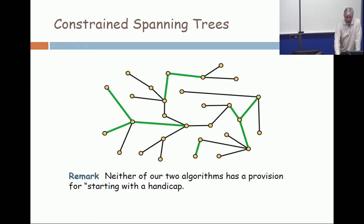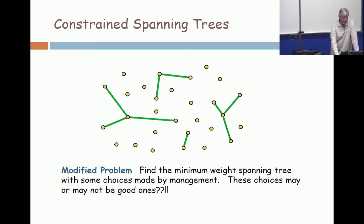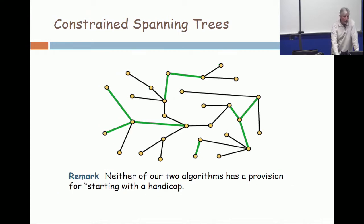And so what I'm trying to signal here is that you're going to build a spanning tree of minimum weight. But I'm going to back up. All those green edges must be present in your solution.